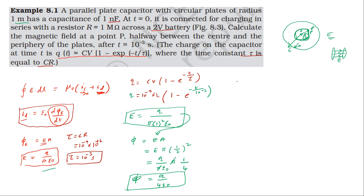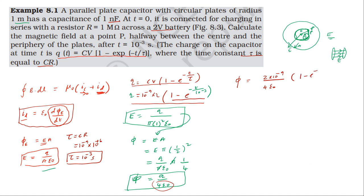Displacement current I_d equals epsilon naught into d phi by dt. First compute d phi by dt: phi equals Q by 4 epsilon naught, so substituting Q equals 2 into 10 power minus 9 into (1 minus e power minus t by 10 power minus 3), then differentiating. The derivative of (1 minus e power minus t by tau) gives e power minus t by tau into 1 by 10 power minus 3. The minus signs cancel.